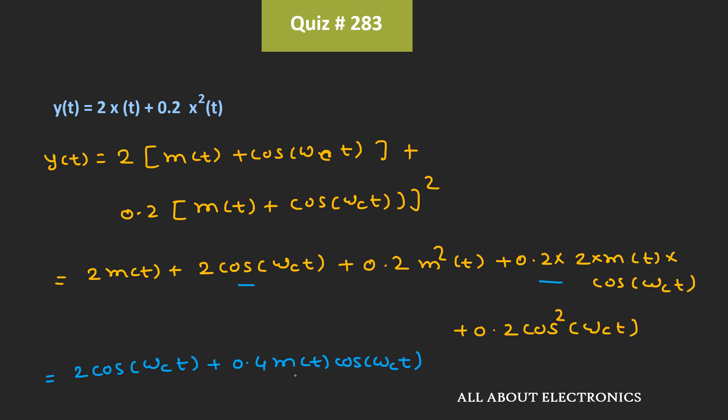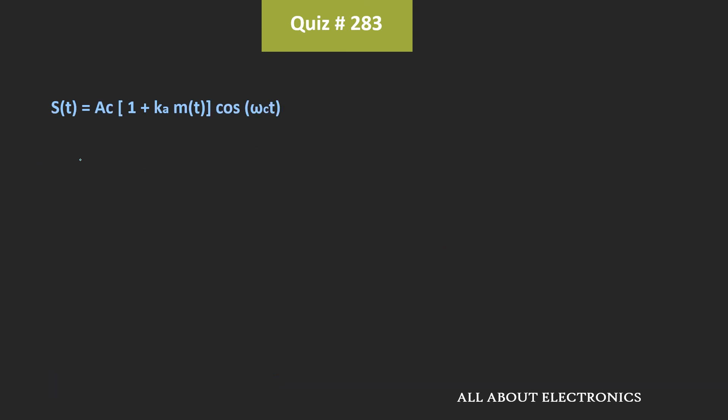And if we write this expression in terms of the standard AM equation, then we can write it as 2 times [1 plus 0.4 divided by 2 times m(t)] times cos(ωct). That is equal to 2 times [1 plus 0.2 times m(t)] times cos(ωct).